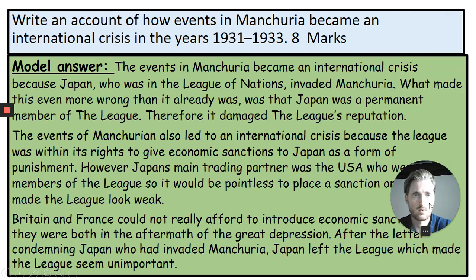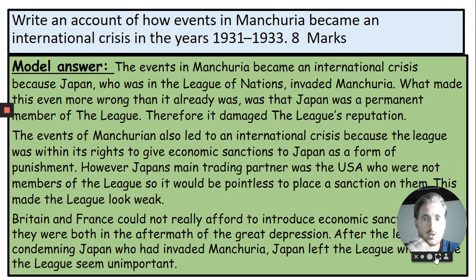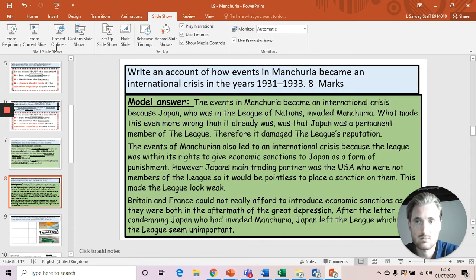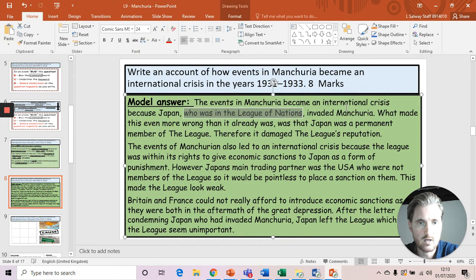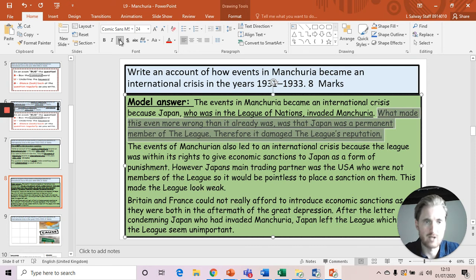So if we look at my model answer: 'The events in Manchuria became an international crisis.' Hopefully you're getting used to using the exam question to help start you off. Some of you say you really struggle to start exam questions — remember, use the exam question to help you start off. So: 'The events in Manchuria became an international crisis because Japan, who was a member of the League of Nations, invaded Manchuria.' I've given my first bit of evidence. Then I'm explaining why this made it a crisis: 'What made this wrong was that Japan was already a permanent member and therefore it damaged the League's reputation.' They signed up to the ideals that you shouldn't invade other countries.